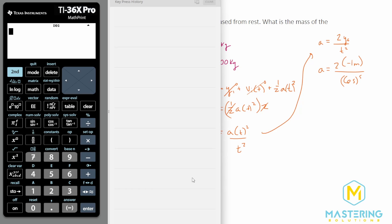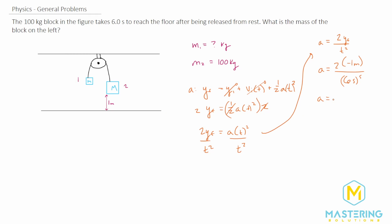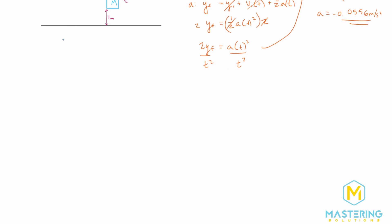It's a negative 2 divided by 6 squared. So we have negative 0.0556. So negative 0.0556 meters per second squared. That's the acceleration for the block here. So we're going to need some space. So let's come down here, and we're going to sum the forces.